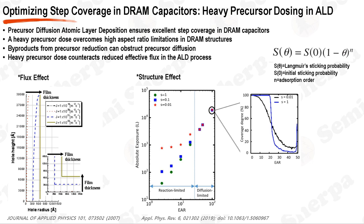The heavy precursor dose ensures that a sufficient amount of material can reach the bottom of the high aspect ratio structures, ensuring a uniform layer of deposition across the entire structure. During the ALD process, the introduction of a high dose of precursors is followed by the reduction of precursors, which could give rise to byproducts that obstruct the diffusion of precursors, thereby reducing the effective flux at the bottom of the DRAM capacitor. This underscores the need for a heavy precursor dose to counteract the reduced effective flux. However, the use of a heavy precursor dose is not without challenges, as it can be difficult to achieve consistently good results.